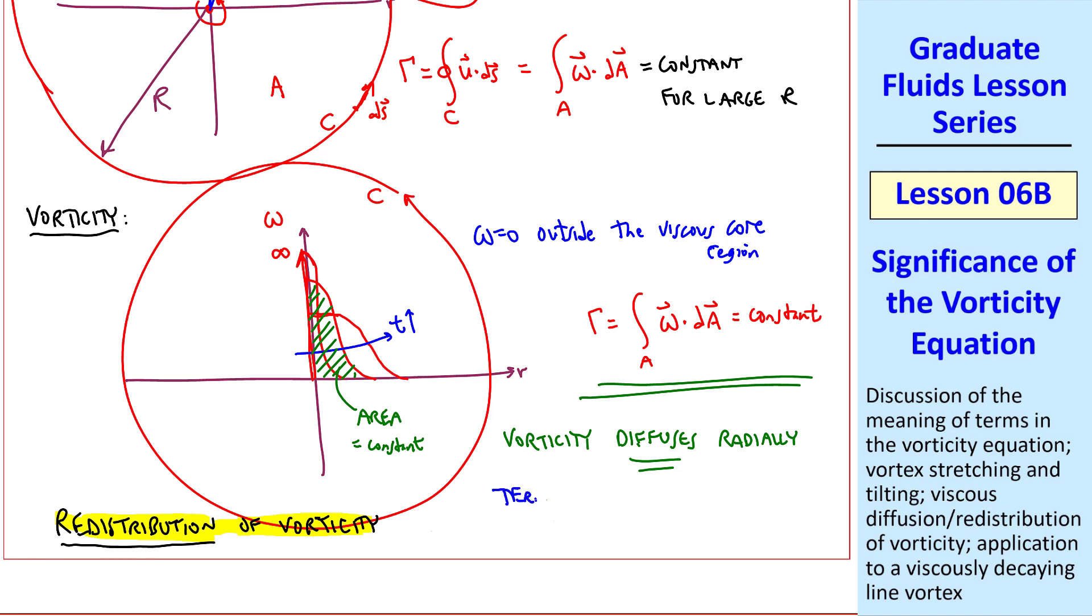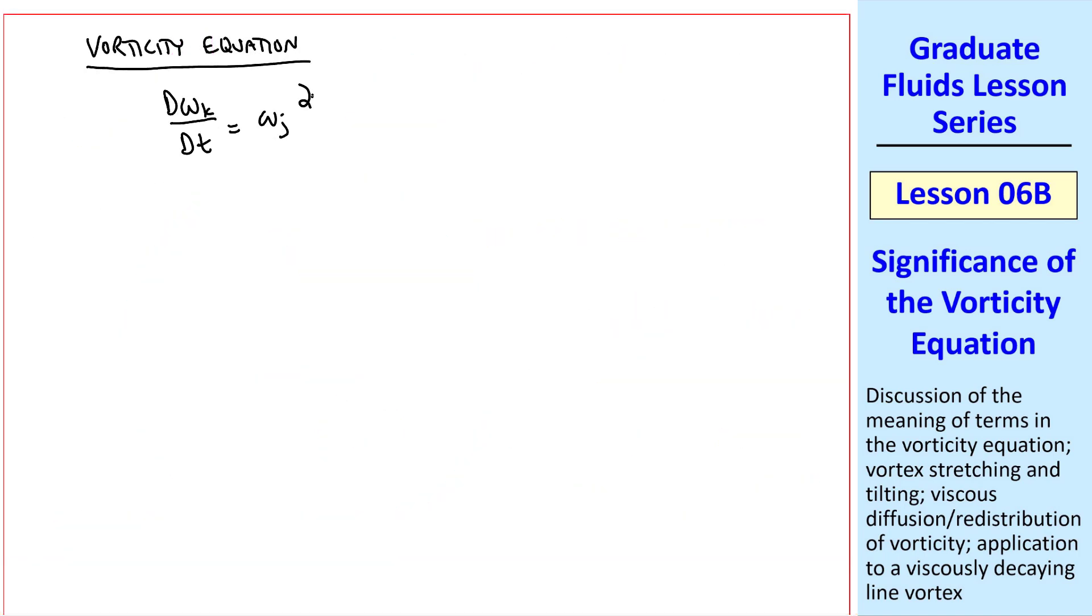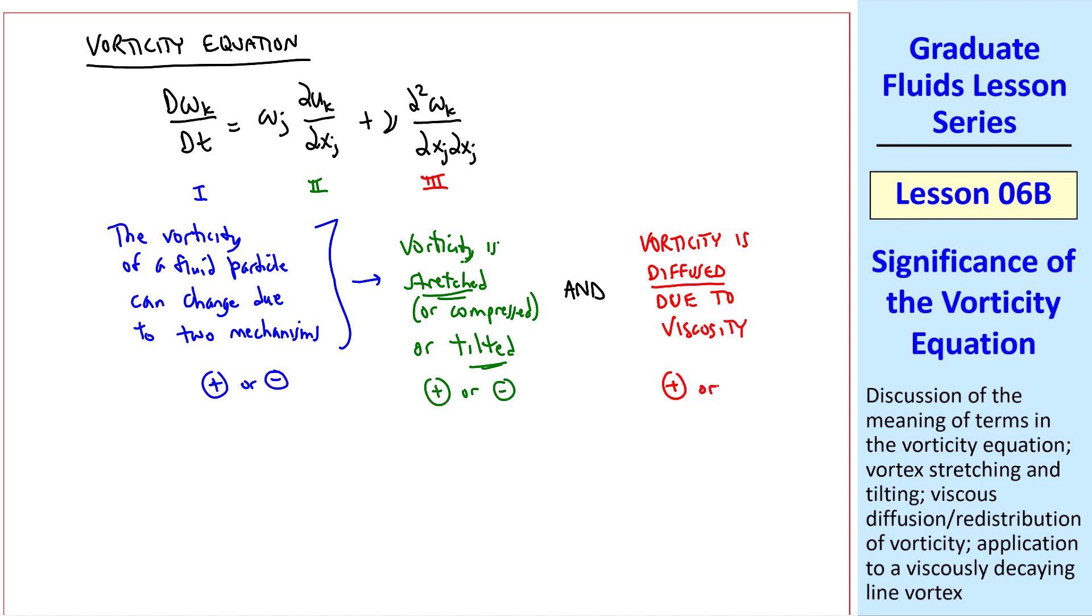We note that terms 1, 2, and 3, all three terms, can be either positive or negative, depending on what's happening in the flow at a given location. I again rewrite the vorticity equation with its terms labeled, and I rewrite it in words. The vorticity of a fluid particle can change due to two mechanisms, namely vorticity is stretched or compressed or tilted, and vorticity is diffused due to viscosity. And all these terms can be positive or negative.